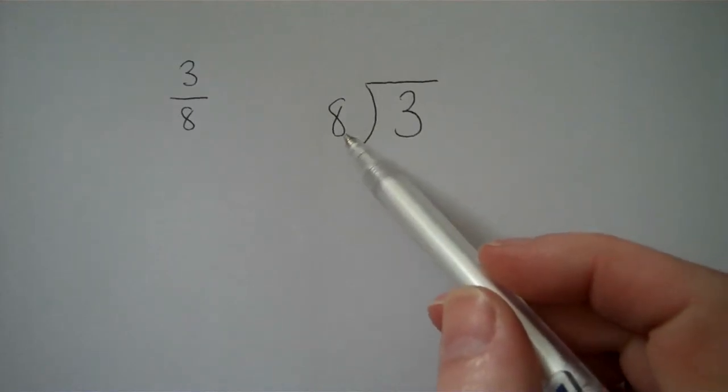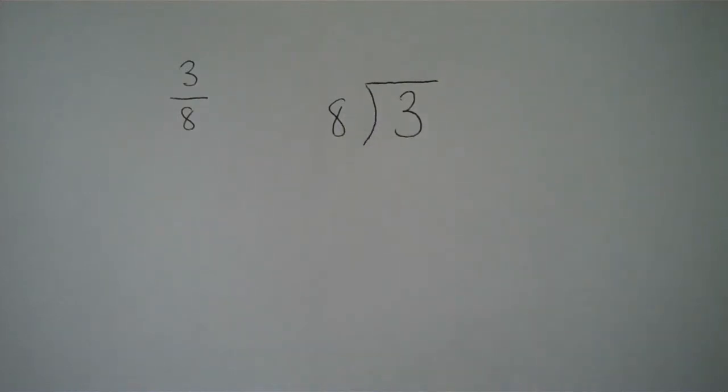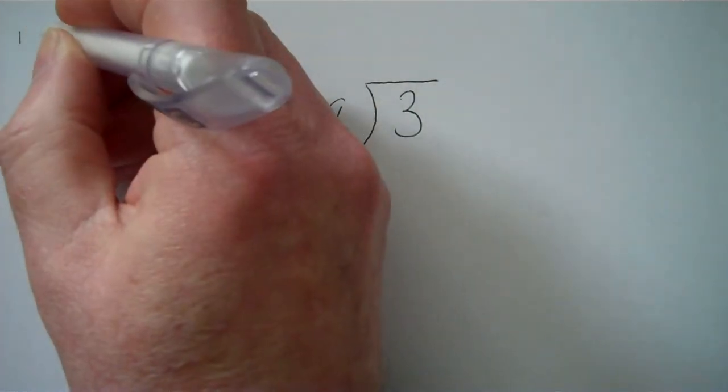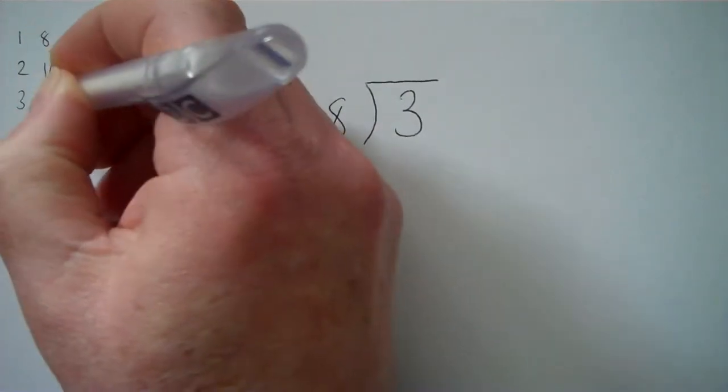Because we're going to be dividing by 8, it's helpful to know the 8 times table. If you know it, all well and good, but if you're a bit doubtful about it, then it might be an idea just to jot down that once 8 is 8, 2 eights are 16, 3 eights are 24.